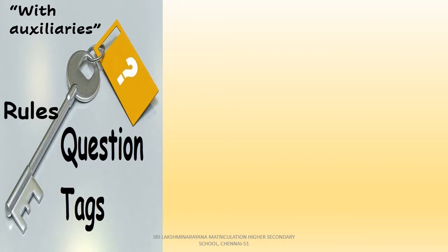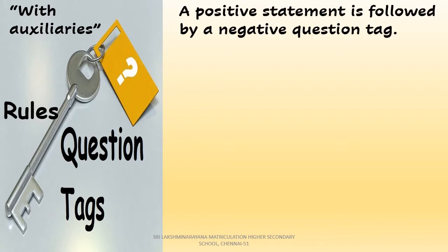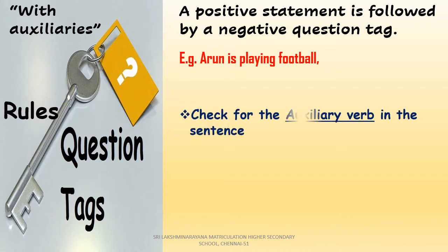There are some rules you need to follow while framing a question tag. First rule: if the given statement is positive, it takes the negative question tag. Check out this example: 'Arun is playing football.' The given statement is positive, so we have to frame a negative question tag. First, check for the auxiliary verb in the given sentence. You find the auxiliary verb 'is,' so place it at the beginning of the question tag.